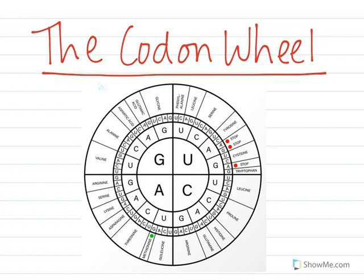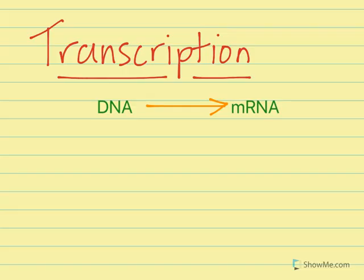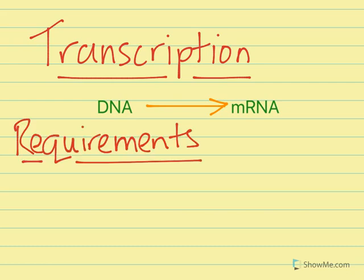For example, the mRNA codon UCU would code for the amino acid serine, and so would UCC, UCA, and UCG. So messenger RNA carries a copy of the genetic code to the ribosomes for protein synthesis.